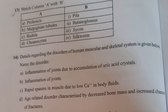Question 13: Match Column A with B. A. Proboscis, B. Malpighian tubules, C. Radula, D. Choanocytes. Matching options: 1. Pila, 2. Balanoglossus, 3. Sycon, 4. Cockroach. Answer: A–2 Balanoglossus, B–4 Cockroach, C–1 Pila, D–3 Sycon.